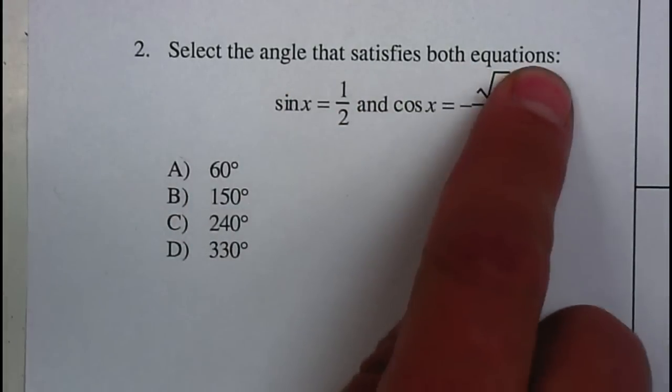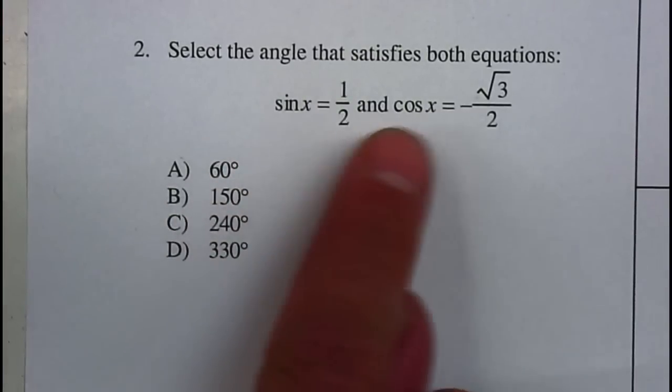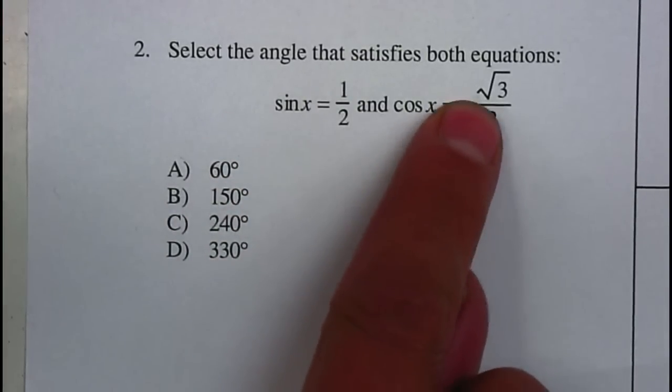Select the angle that satisfies both equations. The sine of x has to be equal to one half, and the cosine of x has to be equal to negative the square root of three over two.